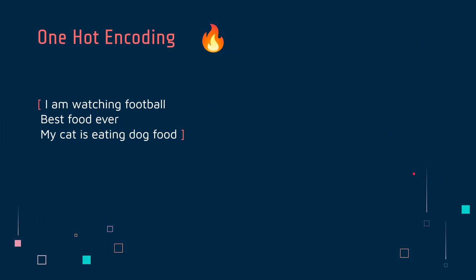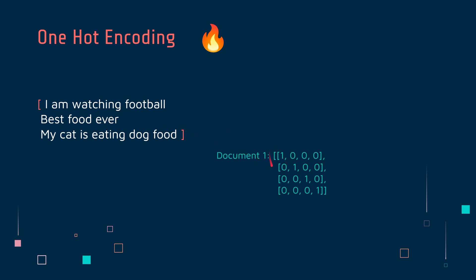So what is one-hot encoding? I feel like it's easier to explain with an example. If I have this corpus — let's just assume that these three are individual documents — if I wanted to apply one-hot encoding to this, the results will be something like this. For document one, if I apply one-hot encoding, I will get this result.